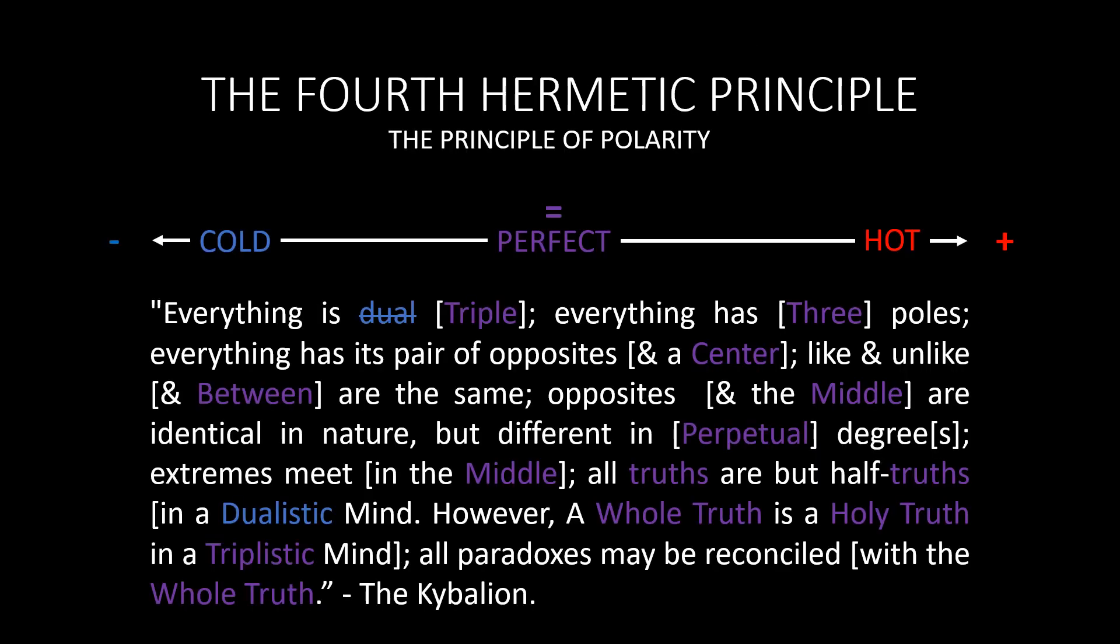So now that we have a clear understanding of the principle of polarity, we can conclude that the principle as originally written is only a partial truth composed of a dualistic thought pattern. While the full truth or whole truth is that of tripolarity. Thus the ancient hermetic principle is fully understood when read that, quote: Everything is triple. Everything has three poles. Everything has its pair of opposites and a center. Like and unlike and between are the same. Opposites in the middle are identical in nature but different in degree. Extremes meet in the middle. All truths are but half truths in a dualistic mind. However, a whole truth is a holy truth in a triplistic mind. All paradoxes which are seeming dualistic contradictions may be reconciled with the whole truth.